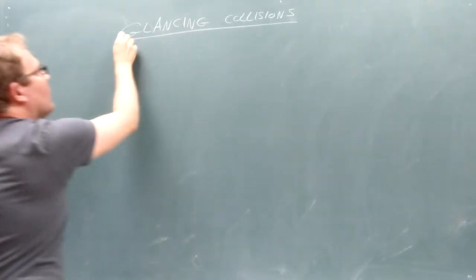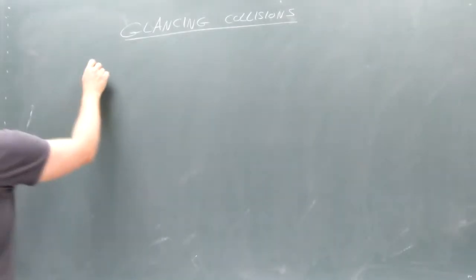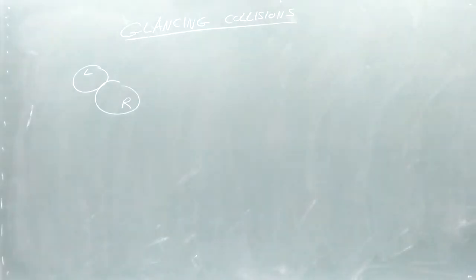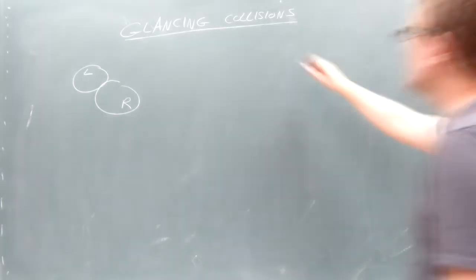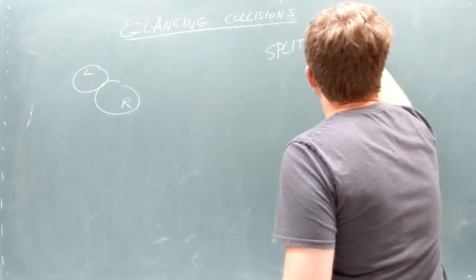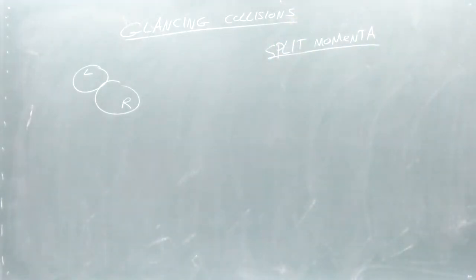When we studied elastic head-on collisions, we could think in terms of the colliders exchanging momentum. We can do the same thing with glancing collisions if we divide the collider's momentum into two pieces.